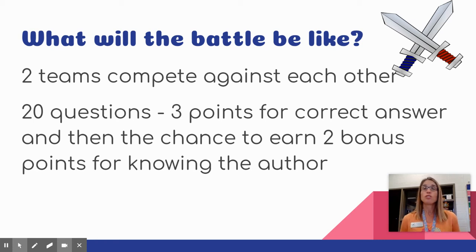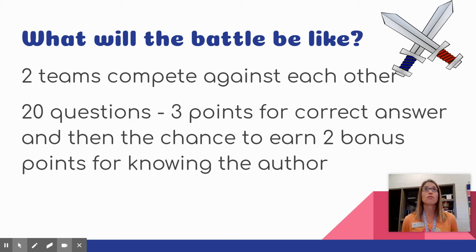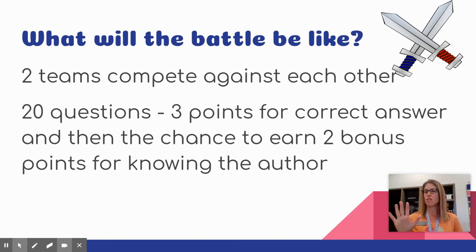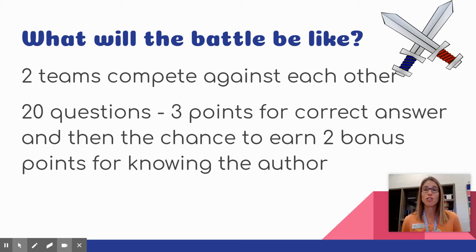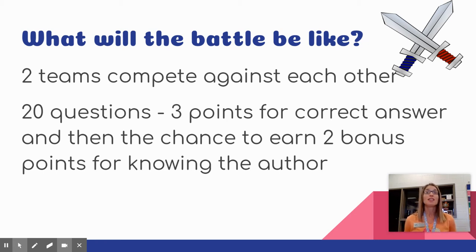When you answer the question, the answer is always going to be the book title. You get three points for saying the correct book title and two bonus points for knowing the author. So as you read the books, make sure to memorize the authors. For example, if in the battle you get five questions right and you don't know any authors, that's 15 points total. But if you knew the authors too, five times five would be 25 points. That's a pretty big point difference — it could be the difference in winning or losing. So learn the authors.